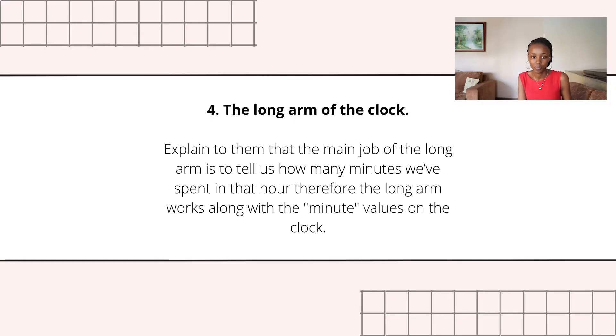The fourth part of the analog clock that we're going to focus on is the long arm. Explain to your child that the main job of the long arm is to tell us how many minutes we've spent in that hour. In other words, if the short arm is on or right after the four, the long arm will tell us how many minutes we've spent into the fourth hour of the morning or evening. Make sure your explanation is simple and easy to understand, and refer back to your visual aid if need be.